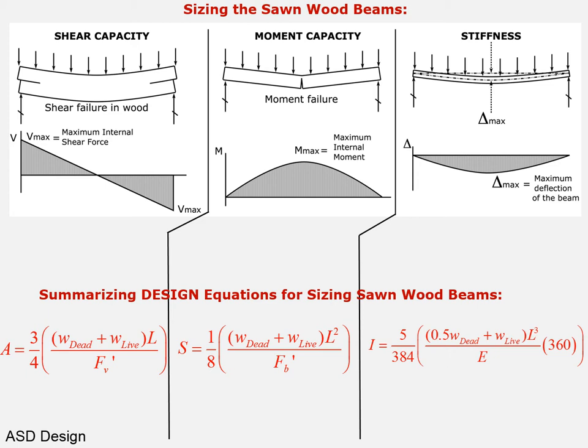The summarizing equations for sizing sawn wood beams were the following. There is a certain required cross-sectional area to make the beam strong enough in resisting shear which is A = (3/4)(W_total + W_live)L / F'_v, where F'_v is the allowed shear stress or the design shear stress for the material in question. The required section modulus is S = (1/8)(W_total + W_live)L² / F'_b, where F'_b is the allowed bending stress or moment stress for the specific grade and species of material that we're dealing with.